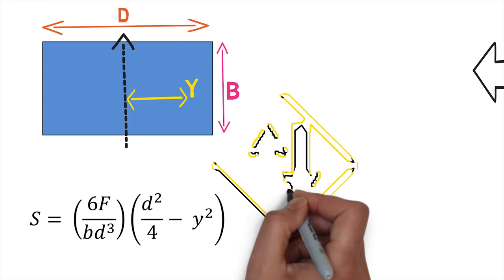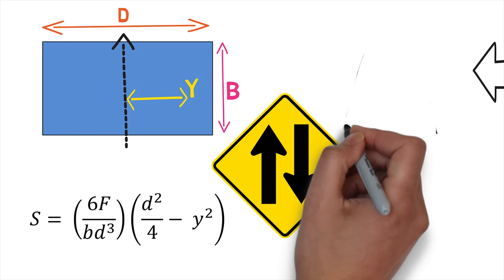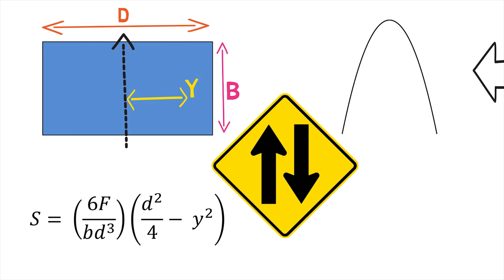The term F in the equation stands for the shear force. The equation shows that there is a parabolic variation of shear stress with y. The maximum shear force occurs at the neutral axis and is given by s equals three times the force upon twice the area.